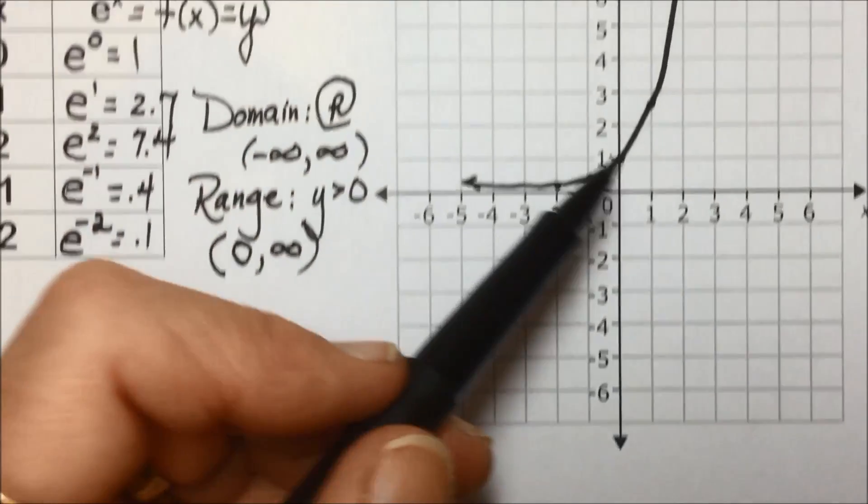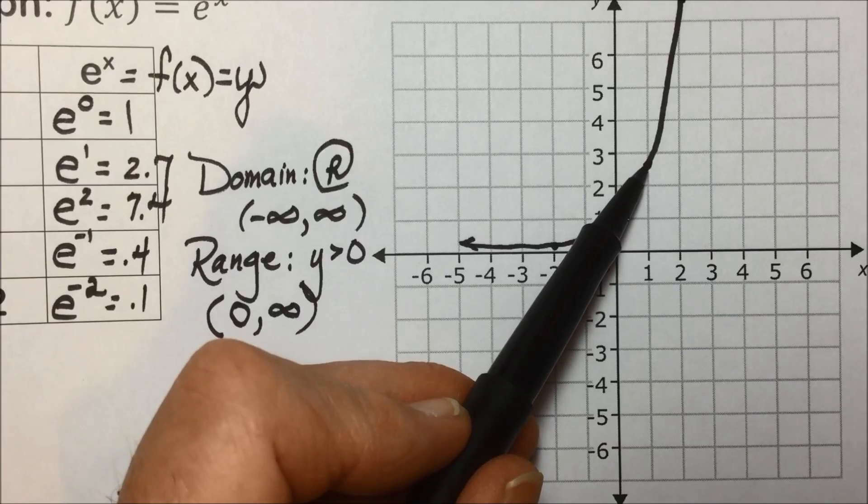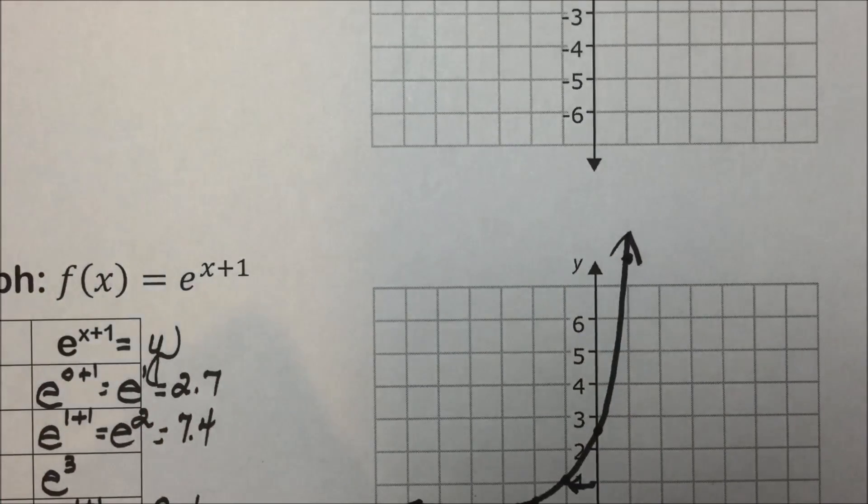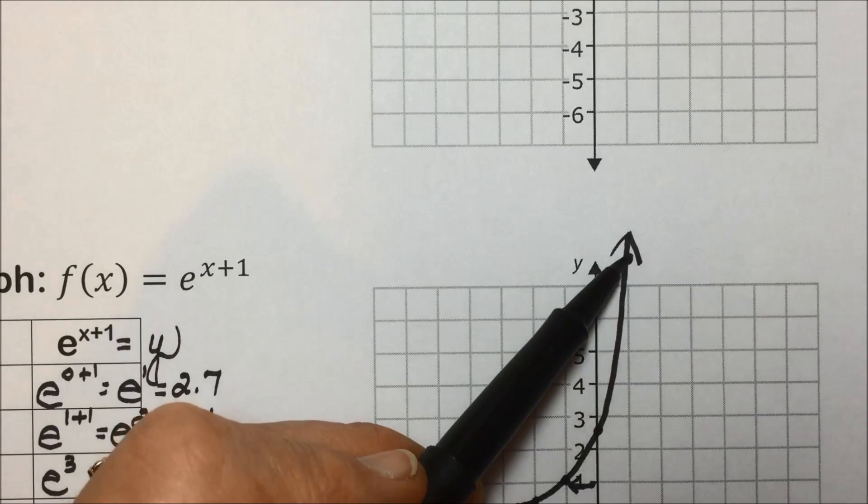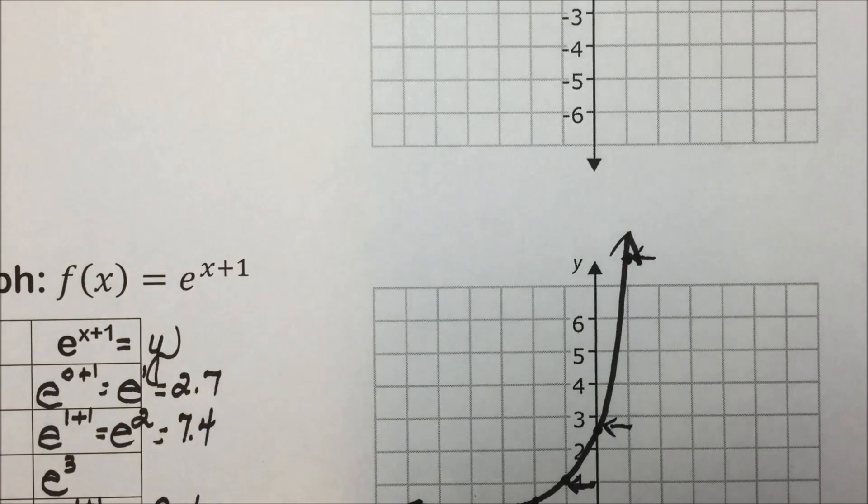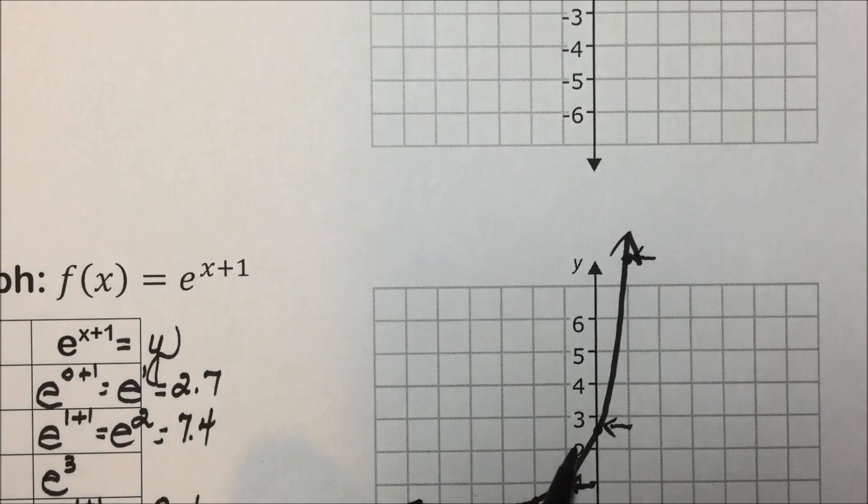And every one of the points we had in our original graph, we had 1 at 2.7, we had 2 at 7.4. Every one of these has been shifted to the left 1. So adding 1 to our exponent shifts, or translates our graph, to the left.